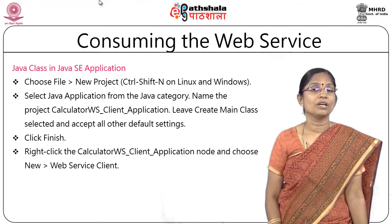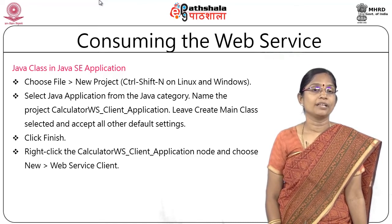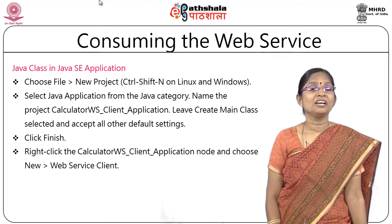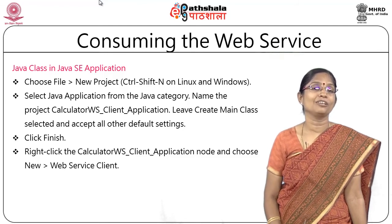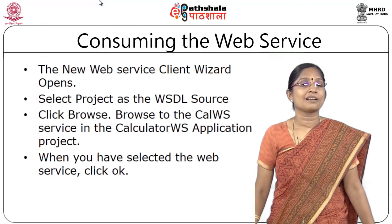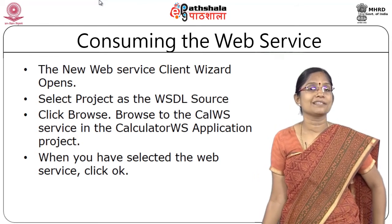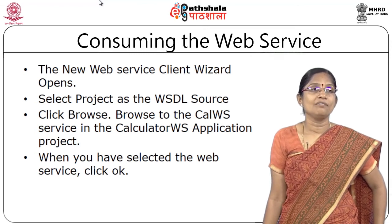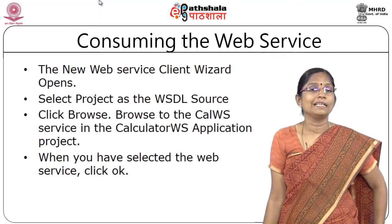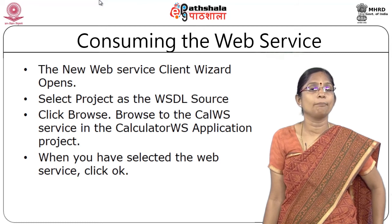Once the client application node CalculatorWS_ClientApplication is created, right-click on it and choose New, then create a Web Service Client. In the New Web Service Client wizard, select the project as the WSDL source. Click Browse and navigate to the CalculatorWS web service in the CalculatorWS application project.